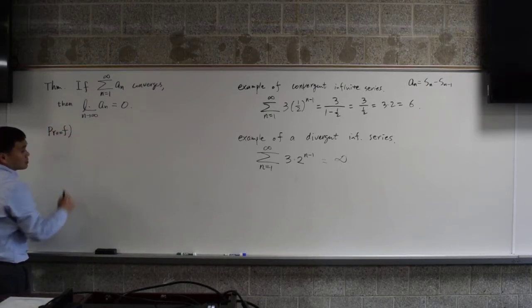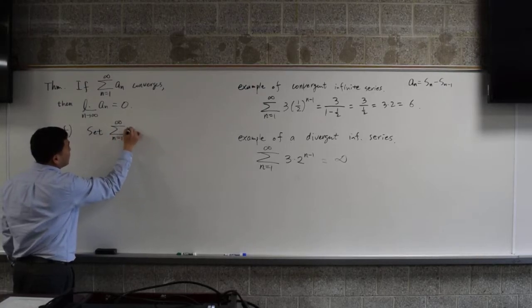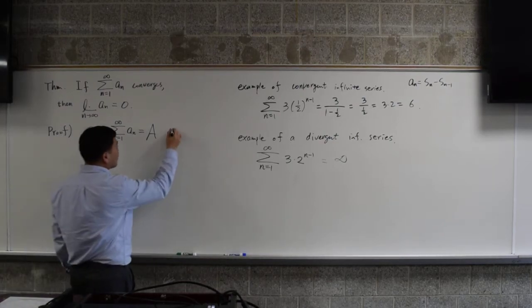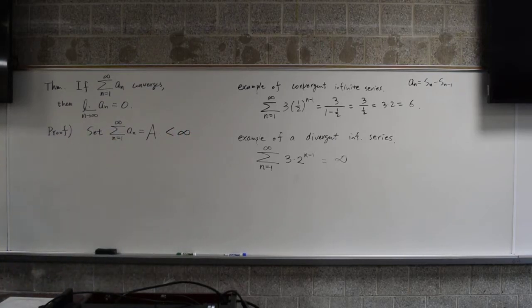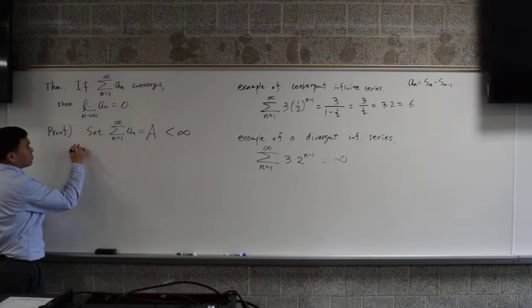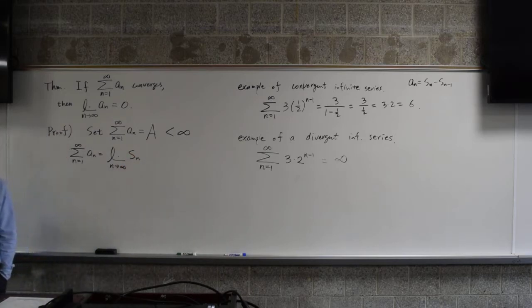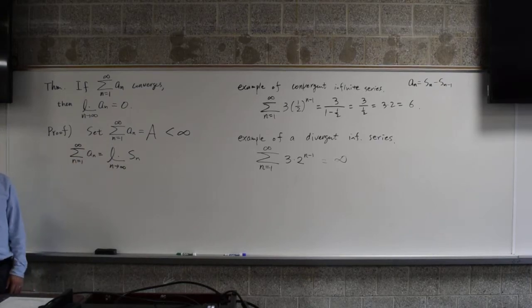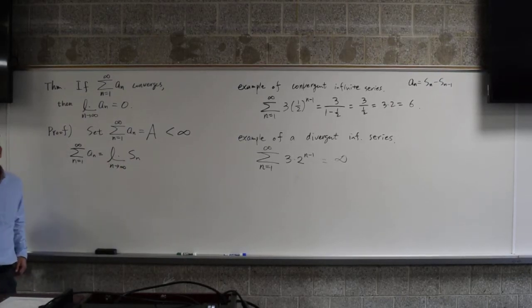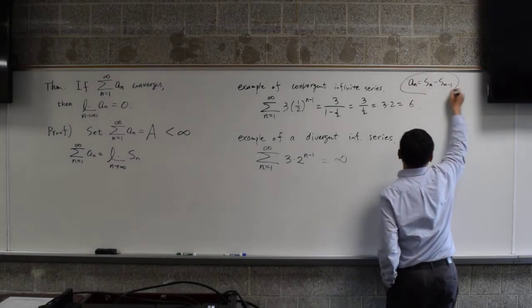Proof. Set summation of n equals to 1 through infinity, a_n, as some value, a. And because it's convergent, that means it's some finite value. It's not infinity. It's a finite value. Now, you realize that sigma n from 1 through infinity of a_n is by definition, it's a limit of n going to infinity of the partial sum, the finite sum. So basically, I'm saying this is the same as S of infinity. If infinity isn't here, then you get S of infinity. And then we use the formula I said I'm going to briefly use. This is the only time this will be used.